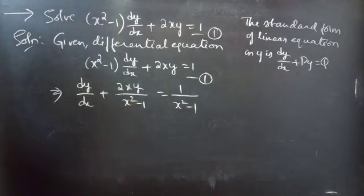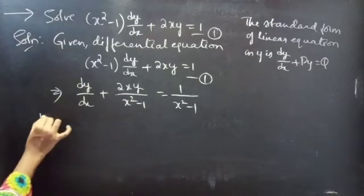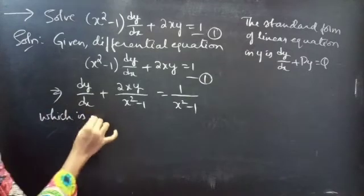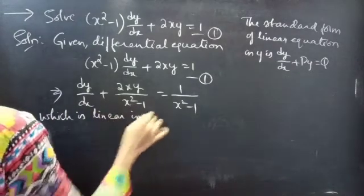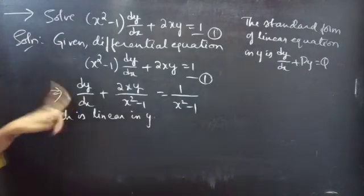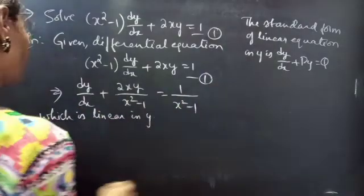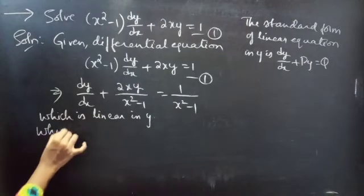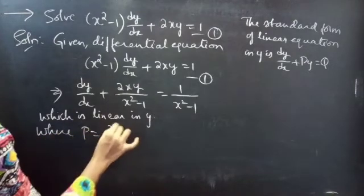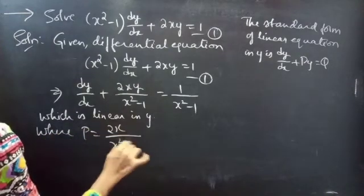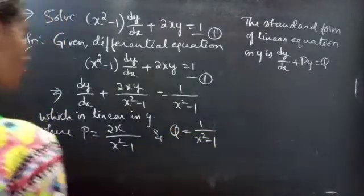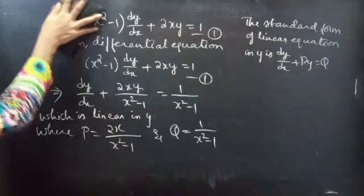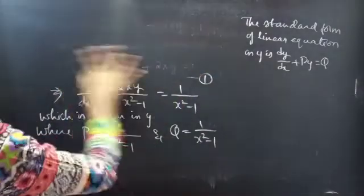So we have reduced the given equation to the standard form of linear equation in y. The coefficient of dy/dx is now 1. By comparing with the standard form, we get P = 2x/(x² - 1) and Q = 1/(x² - 1).